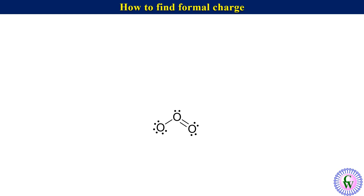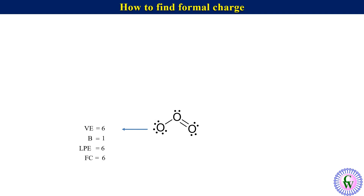The next example is ozone. This is the Lewis structure, which has 3 oxygen atoms. Formal charge on the left side oxygen: Ve = 6. There is only 1 covalent bond around it, so B = 1. There are 6 electrons as lone pairs, so Lpe = 6. Thus formal charge = 6 − 1 − 6 = −1.